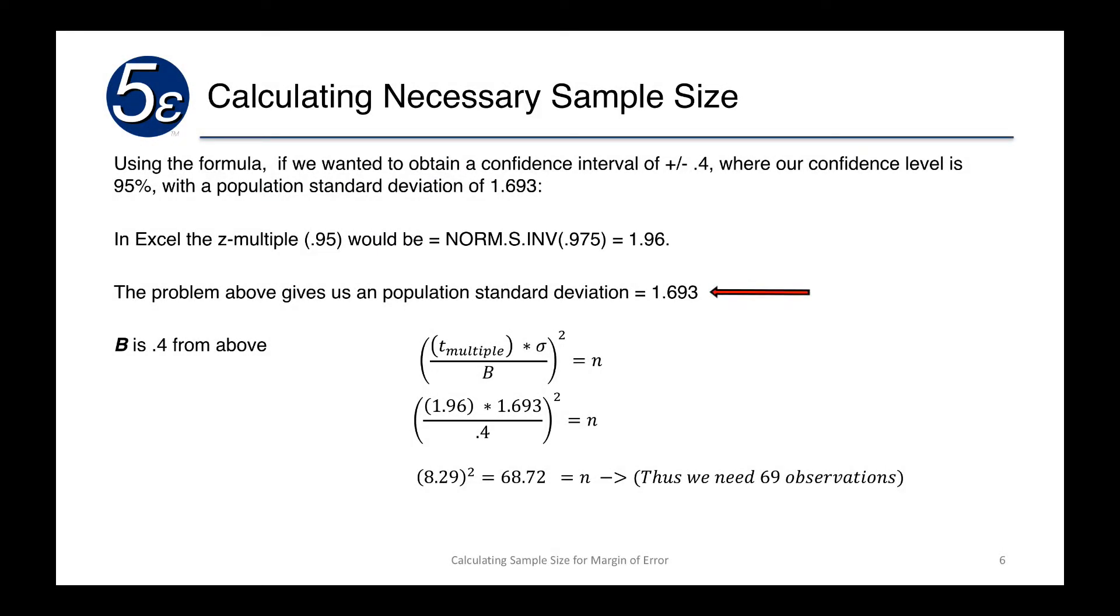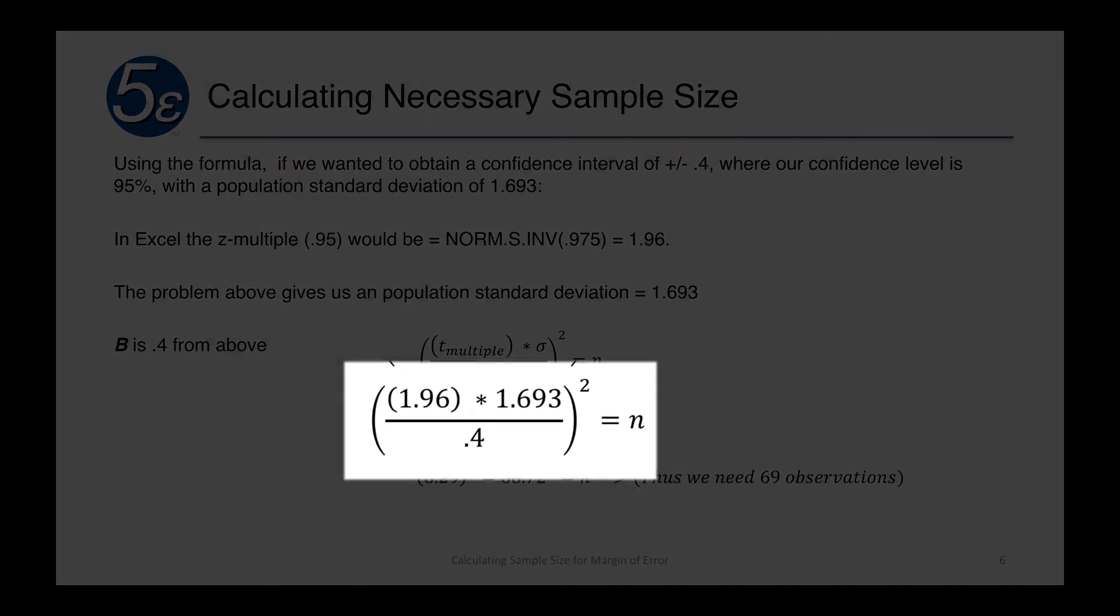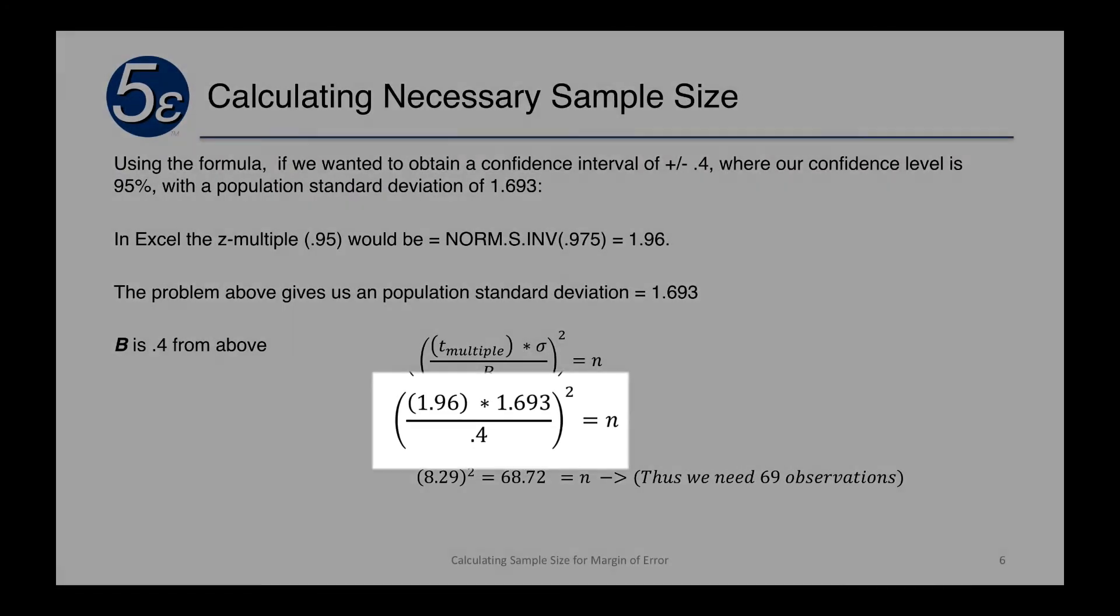And our problem statement gave us a population standard deviation estimate of 1.693. So b being .4 from above, we can replace the values into the formula. And we get 1.96 times 1.693 divided by .4 and then square it.